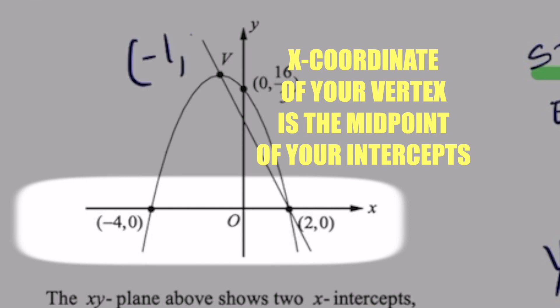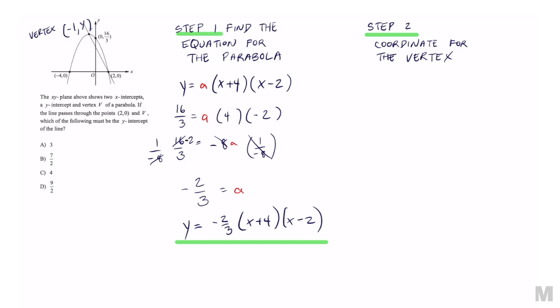But we don't have that y-coordinate, so that was the whole point of getting this equation. We can easily get that by substituting negative 1 for x. You're going to get y equals negative 2/3 times 3 times negative 3. One of these ends up canceling out, and negative 2 times negative 3 equals positive 6. So now we got the vertex point.